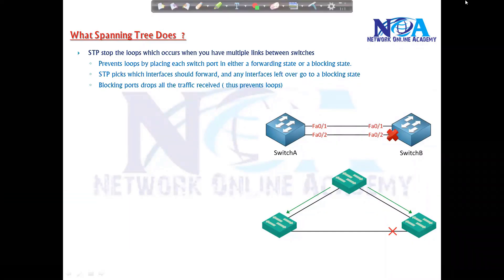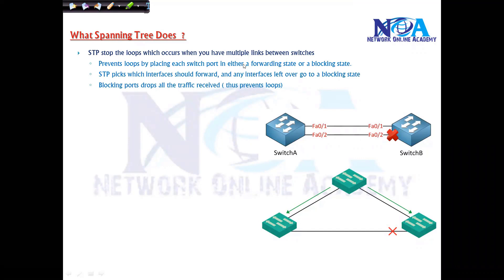The loops can be prevented with the help of STP, and those loops will generally occur when you have multiple links between the switches. So preventing the loops by putting each port in the forwarding or blocking state. As I said, if you have two ports, it is going to put one of the port in the forwarding, another one will be in the blocking.